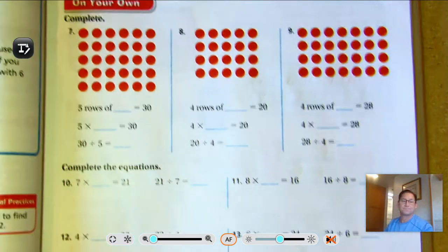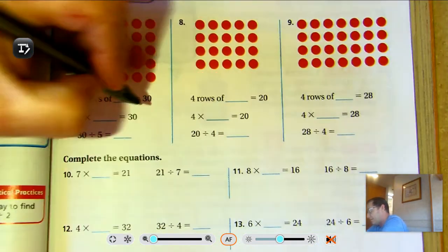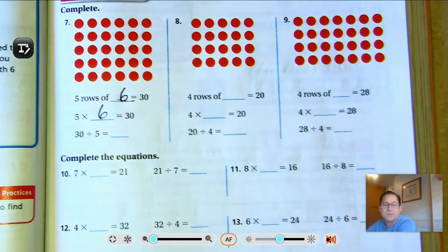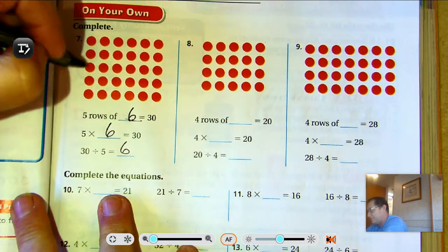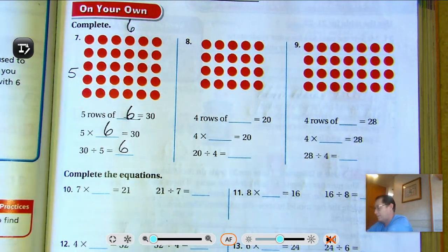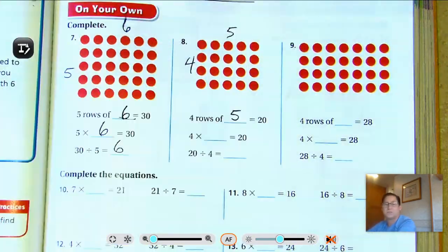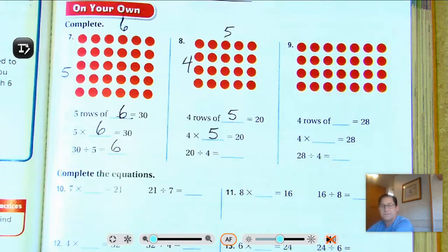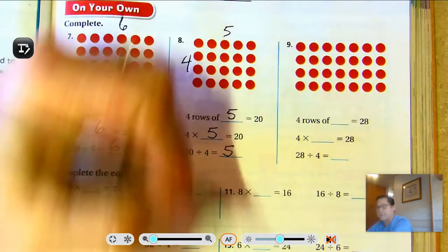Number seven. Five rows of what is 30? Six. Five rows of six is 30. So five times six is 30. And 30 divided by five is six. Four rows of five is 20. So four times five is 20. And 20 divided by four is five.